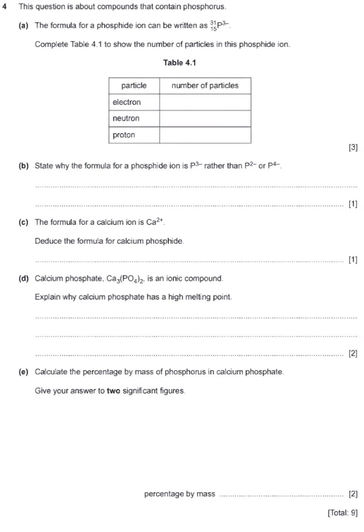The number of electrons is going to be 18. For the number of neutrons, we use the formula: A equals Z plus N, where N denotes neutrons. A represents the mass number of the phosphide ion, which is 31.